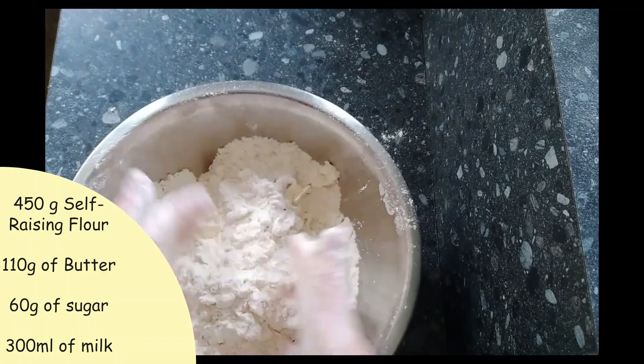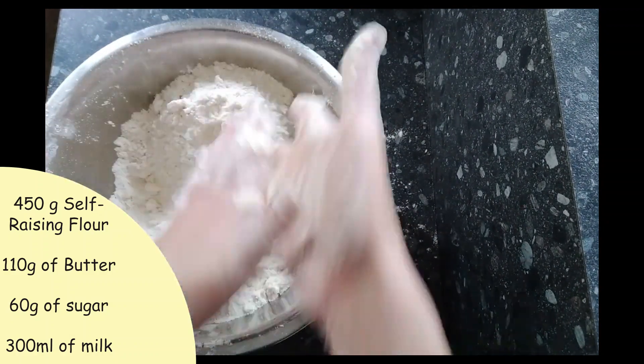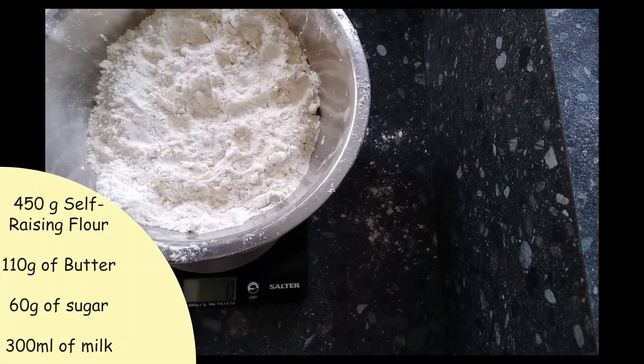So just keep rubbing them in. You can tap the side of the bowl to get the lumps to go to the top. Now add your 60 grams of sugar.